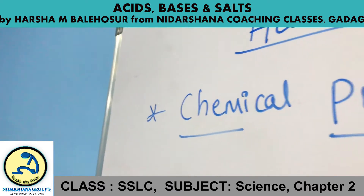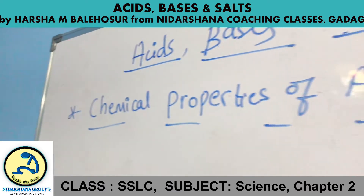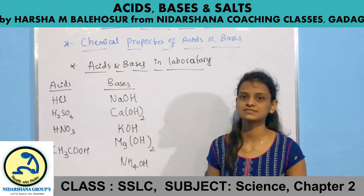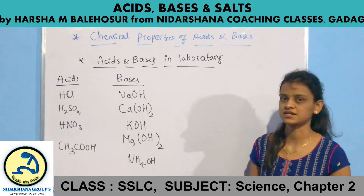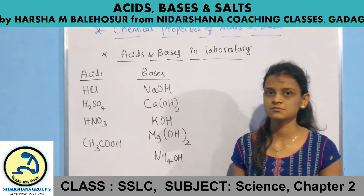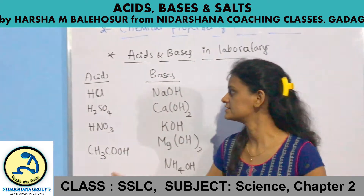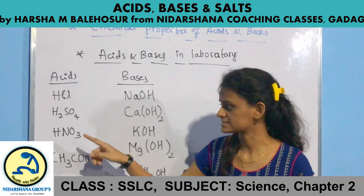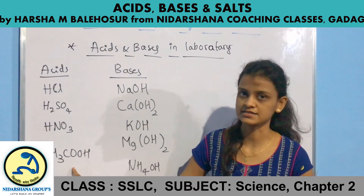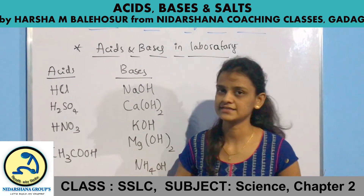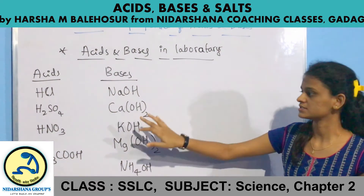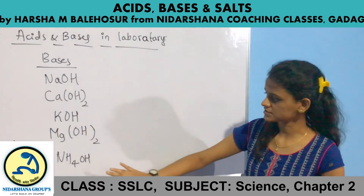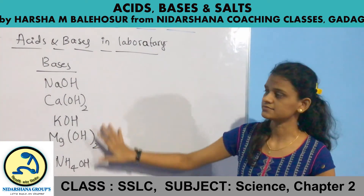Now let us see the chemical properties of acids and bases. Some acids and bases available in the laboratory include: hydrofluoric acid, sulfuric acid, nitric acid, and acetic acid — these are acids. Sodium hydroxide, calcium hydroxide, potassium hydroxide, magnesium hydroxide, and ammonium hydroxide — these are bases.